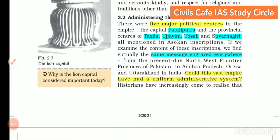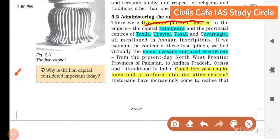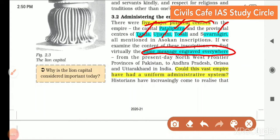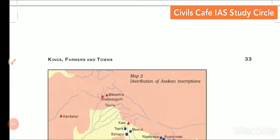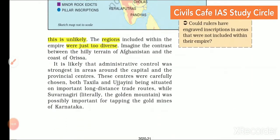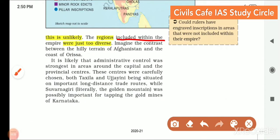The empire was administered from five major political centers: the capital Pataliputra, and four others — Taxila, Ujjaini, Tosali and Suvarnagiri. When we examine the content of inscriptions laid by kings, we find virtually the same message engraved everywhere. Does this indicate that a uniform administrative system was in place? Historians have increasingly come to realize this is unlikely, because the regions included within the empire were too diverse for administrative structures to be uniform.